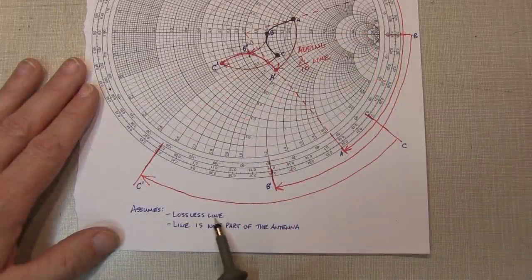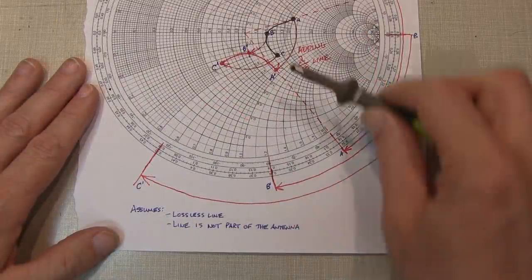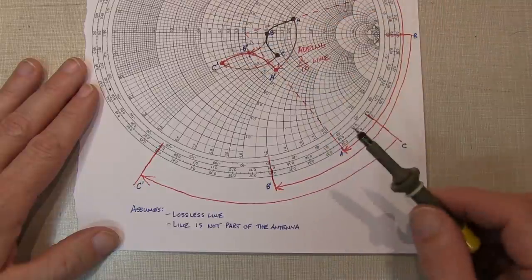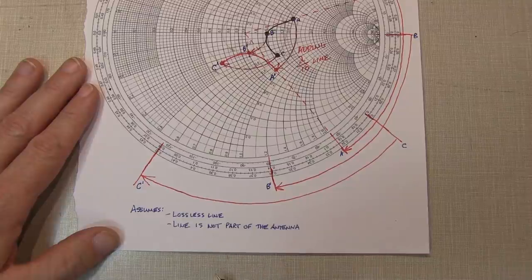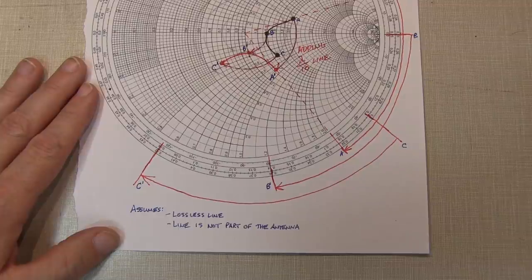And again, this is assuming a lossless transmission line. If there were losses, these circles actually start to spiral inwards. And it also assumes that the line is not a significant part of the antenna. So let's go take a look at this with the VNA and see what we're talking about.